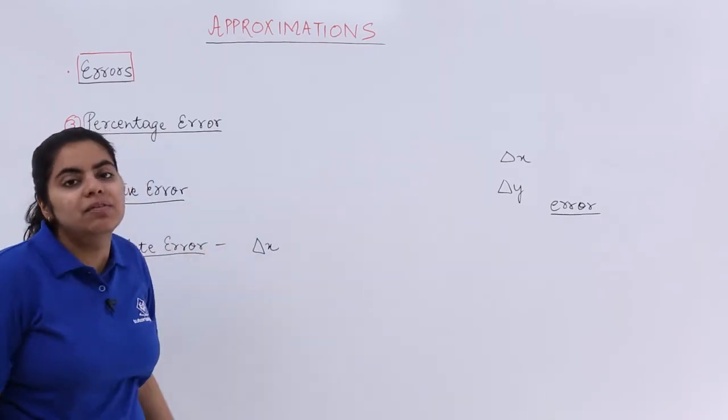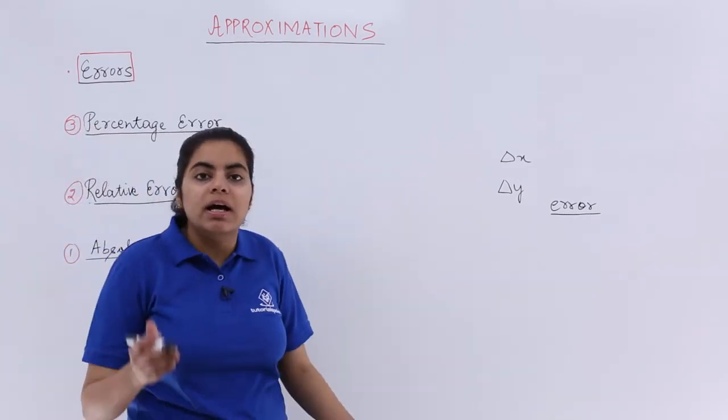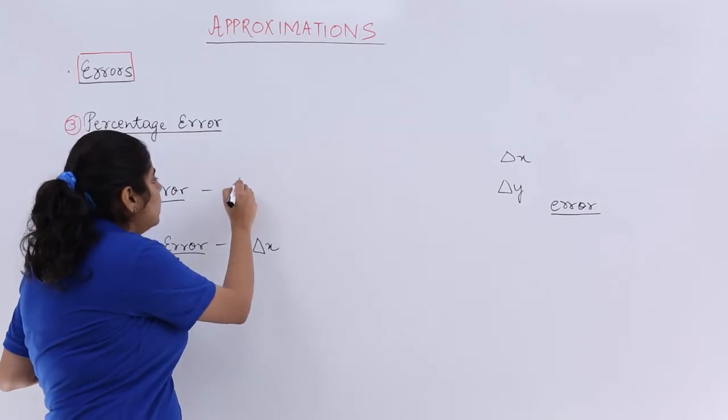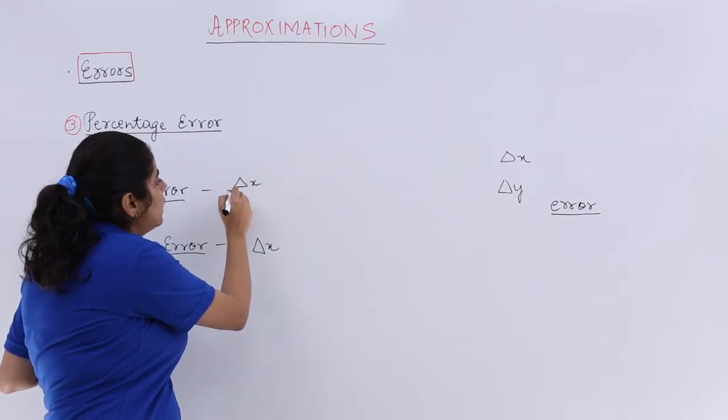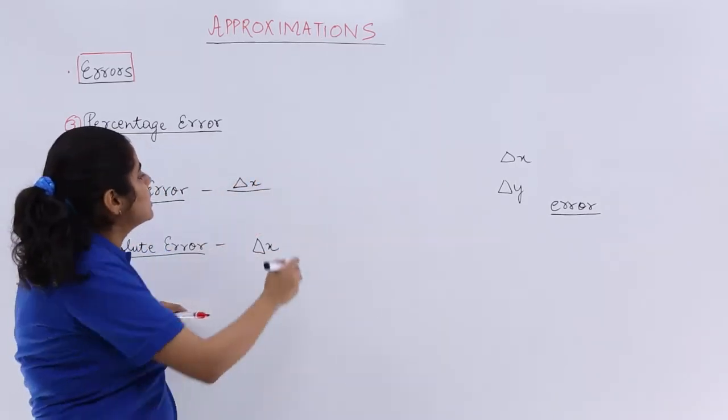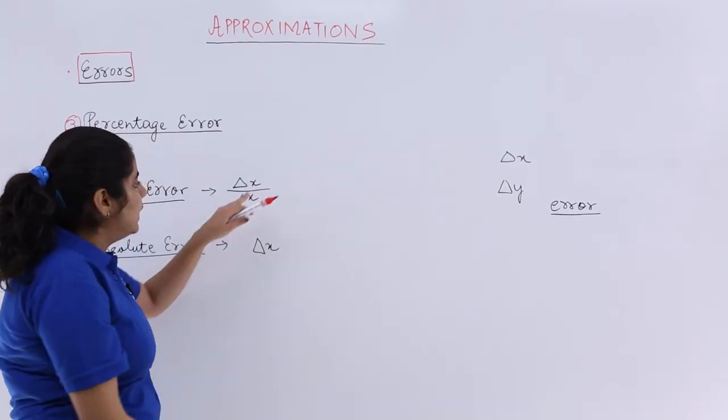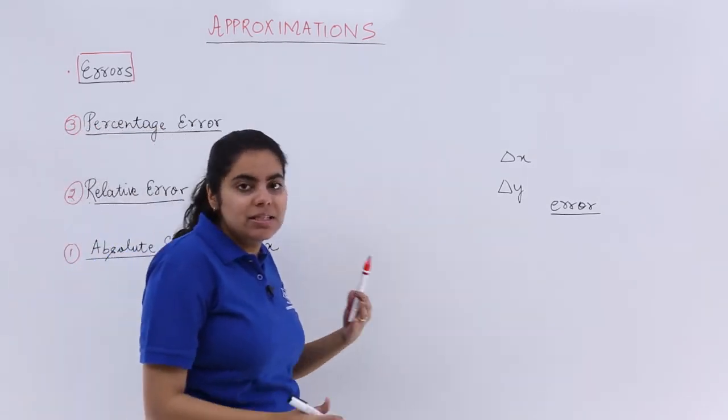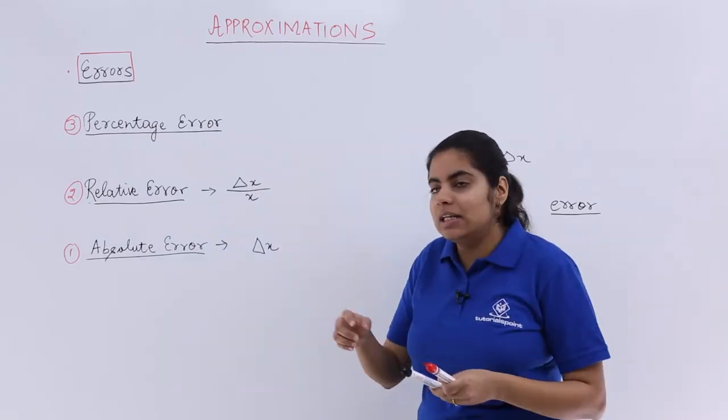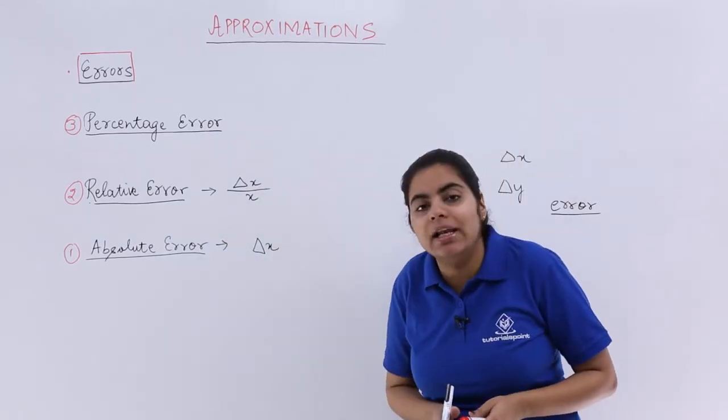Next we are going to talk about relative error. Relative error is what? Relative error is nothing but the value obtained by the fraction of del x and x. So del x upon x. x is the original value, right? And del x is the deviation. So del x upon x is the relative error.